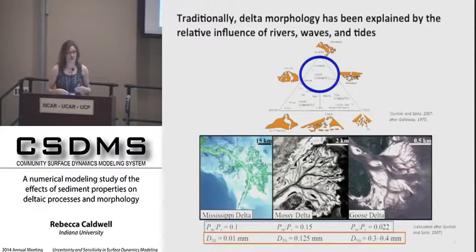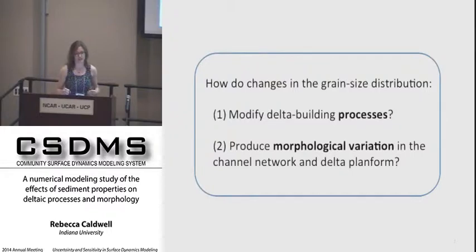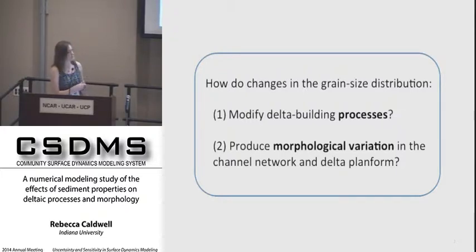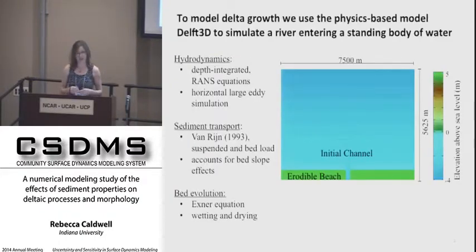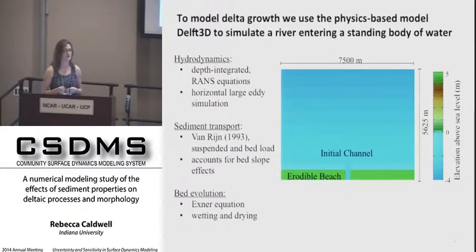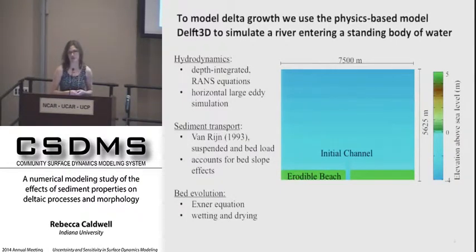This leads us to ask if perhaps grain size is affecting their morphology. Specifically, we're asking: how do changes in the incoming grain size distribution modify delta-building processes and produce morphological variation in the delta's channel network and its plan-form morphology? To answer these questions, we're numerically modeling delta growth in DELF3D, which is a physics-based morphodynamic model that simulates fluid flow and sediment transport.